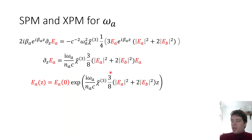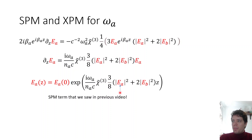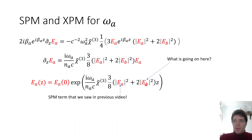Rearranging gives a differential equation for how the ea field evolves as we propagate in the z direction. This can be solved using a complex exponential where the initial field value evolves with a phase shift that depends on both the distance traveled and the absolute square of the two fields. The first term is the self-phase modulation term from the previous video, and we also get a new term depending on the other launched field.